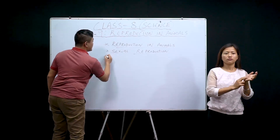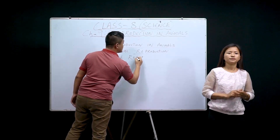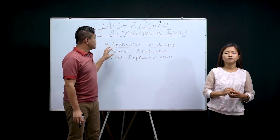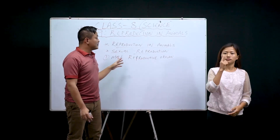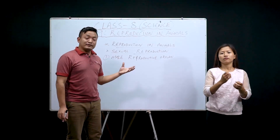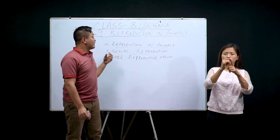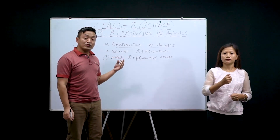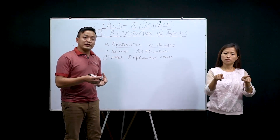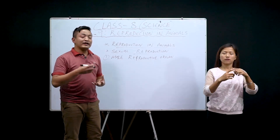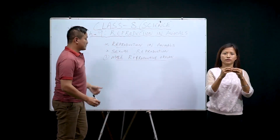Under sexual reproduction in humans, we will first study about the male reproductive organ and then the female reproductive organs. Under the male reproductive organ, the male produces a male gamete known as sperm. The female produces a female gamete known as ova or egg. This sperm and ova fuse together to form a zygote — this is how an individual is produced.